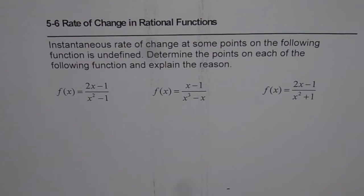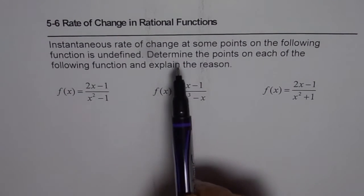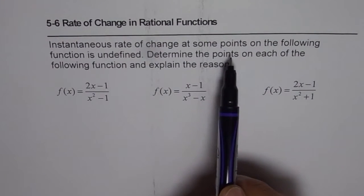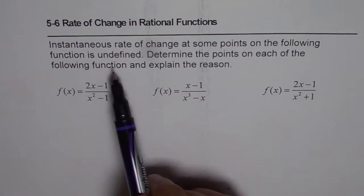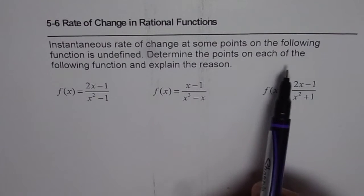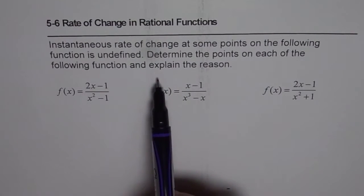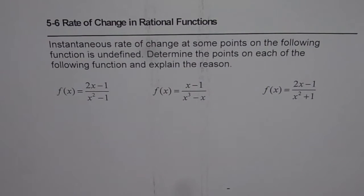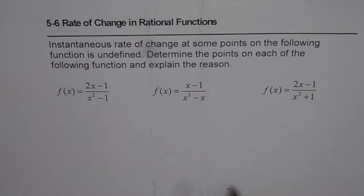I am Anil Kumar and here is an interesting question on instantaneous rate of change. The question is: instantaneous rate of change at some points on the following functions is undefined. Determine the points on each of the following functions and explain the reason. There are three functions given to us and we need to find the points where it is not possible to have instantaneous rate of change.